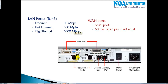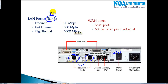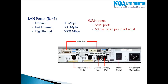Which port you find depends upon the different models. For example, a 2621 series router has two Fast Ethernet ports built in. These Ethernet ports look the same as the port on the back of your computer. The next category of ports is WAN ports.